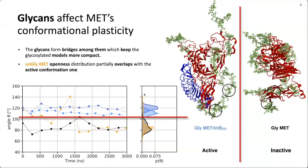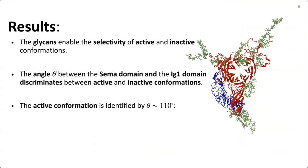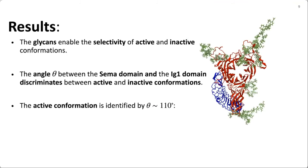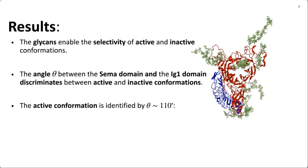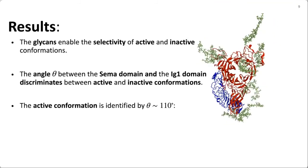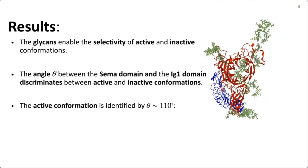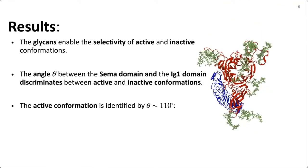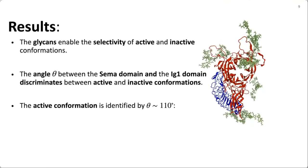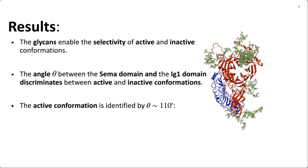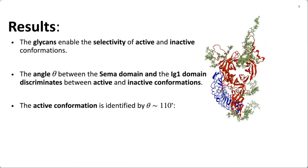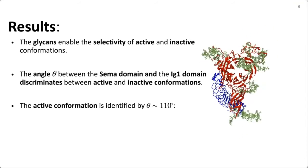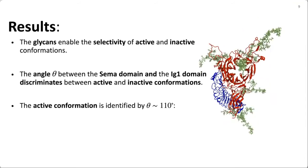To summarize: the glycans seem to select between active and inactive conformations; the angle theta is an optimal discriminant for active and inactive conformations of the upper region of the ectodomain; and the active conformation can be identified with a theta of around 110 degrees.